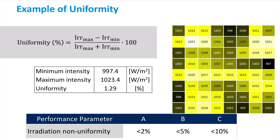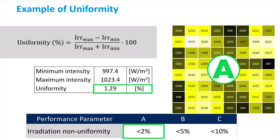In this example, the irradiance was measured in each of the 64 blocks. Then the minimum and maximum intensities, highlighted respectively in black and white in the figure, are used to calculate the uniformity percentage, also called intensity deviation. Here the intensity deviation is 1.29%, which is lower than the 2% threshold. Therefore the simulator can score an A, which is the maximum achievable for this standard.